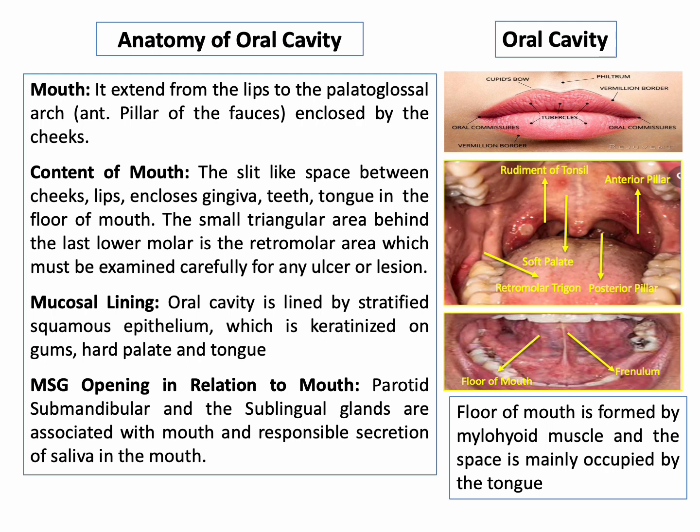The oral cavity is enclosed by the cheeks. The slit-like space between cheeks and lips encloses the gingiva, teeth, tongue, and the floor of the mouth. The floor of the mouth is formed by the mylohyoid muscle and is mainly occupied by the tongue. The small triangular area behind the last lower molar is the retromolar area, which must be examined carefully for any ulcer or lesion.